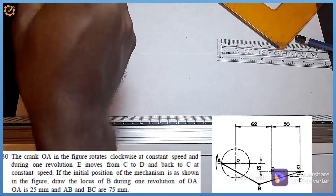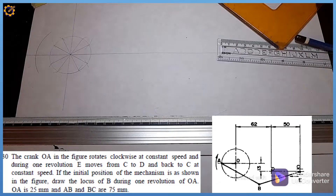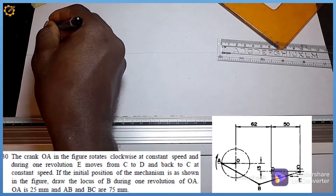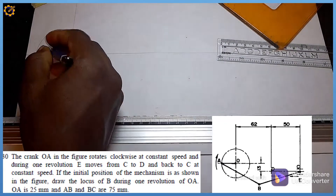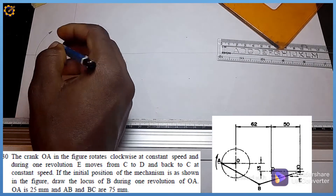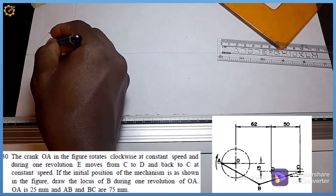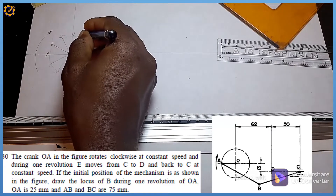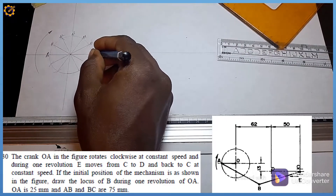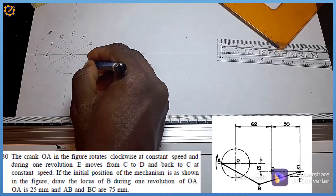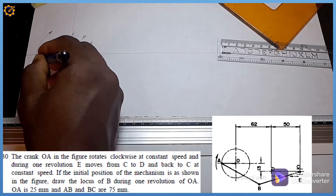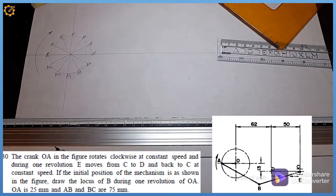Pick a convenient radius and extend it beyond OA — that's the direction of our arrow. This is our mark A, which I will denote as A0. Then I label the remaining positions as A1, A2, A3, A4, A5, A6, A7, A8, A9, A10, and A11.